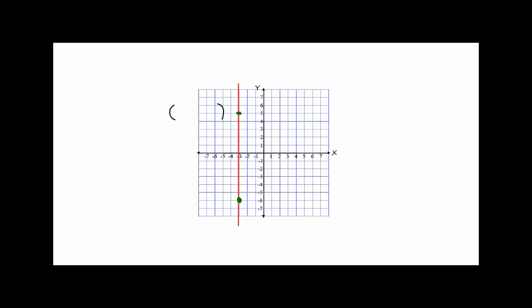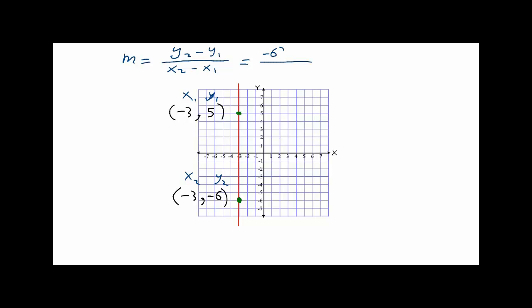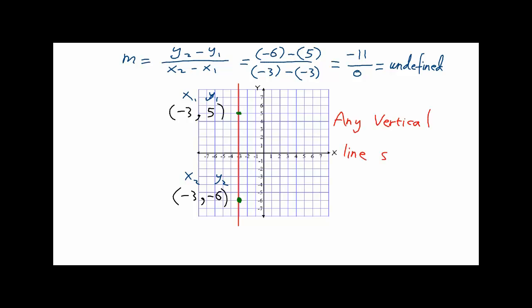Now let's look at a vertical line with two points: (-3, 5) and (-3, -6). Labeling them x1, y1, x2, y2 and applying the slope formula: m equals (-6 minus 5) over (-3 minus -3), which gives negative 11 over 0. This value is undefined. Any vertical line has an undefined slope.